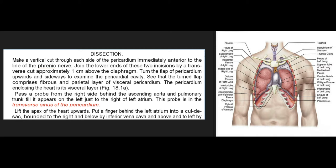Dissection: Make a vertical cut through each side of the pericardium, immediately anterior to the line of the phrenic nerve. Join the lower ends of these two incisions by a transverse cut approximately 1 centimeter above the diaphragm. Turn the flap of pericardium upwards and sideways to examine the pericardial cavity. Note that the turned flap comprises fibrous and parietal layers of serous pericardium. Pass a probe from the right side behind the ascending aorta and pulmonary trunk till it appears on the left, just to the right of the left atrium — this probe is in the transverse sinus of the pericardium. Lift the apex of the heart upwards and put a finger behind the left atrium into a cul-de-sac bounded to the right and below by the inferior vena cava and above and to the left by the lower left pulmonary vein — this is the oblique sinus of the pericardium.